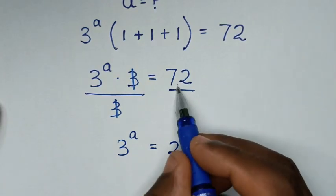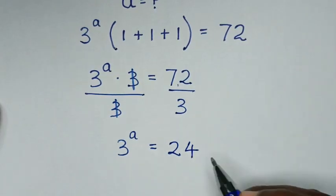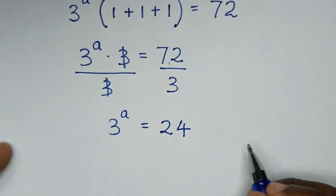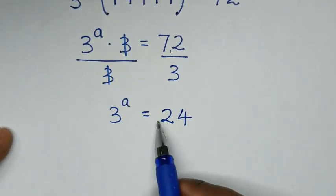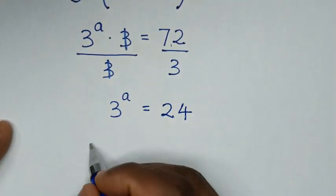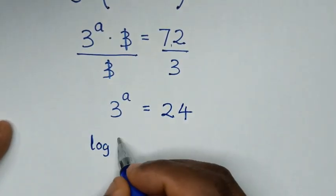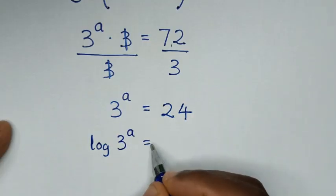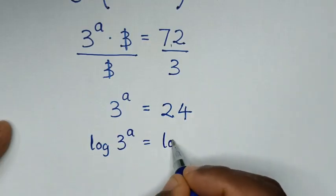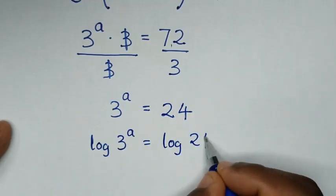So it will be over 2: 12 divided by 3 is 4. So 3^a is equal to 24. Then from here we'll apply log on both sides, so it will be log of 3^a is equal to log of 24.